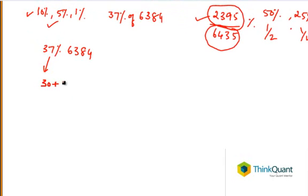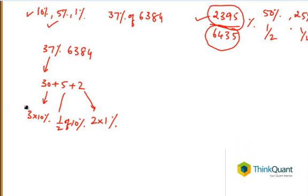5 is half of 10%, and 2 is 2 × 1%. So we can split 37% into this form with reference points of 10, then 5 (which is half of 10), and 2 × 1. First, we have to look at what percentage we're trying to